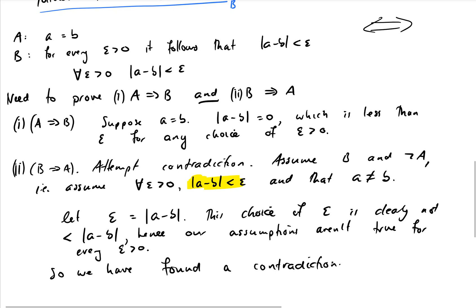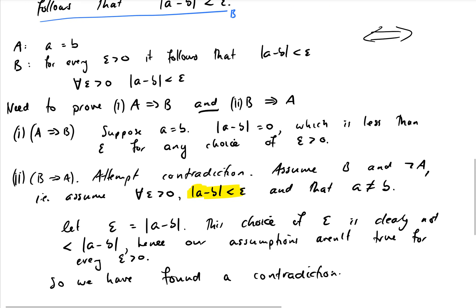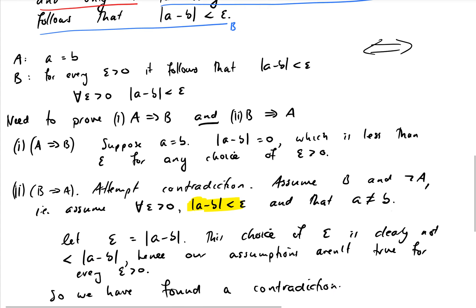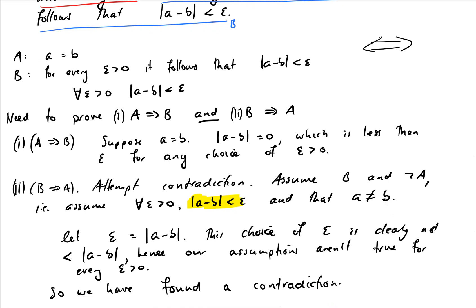Hopefully that makes sense — if it was a bit much in one go, go over the steps more slowly to take in the overall structure. We took our statement about numbers being equal if and only if some other condition, broke it into statements A and B recognizing we had an if and only if proof, then handled each component separately. The first was straightforward; the second we did by contradiction, finding an epsilon that violated our assumptions, completing the proof of the whole theorem.